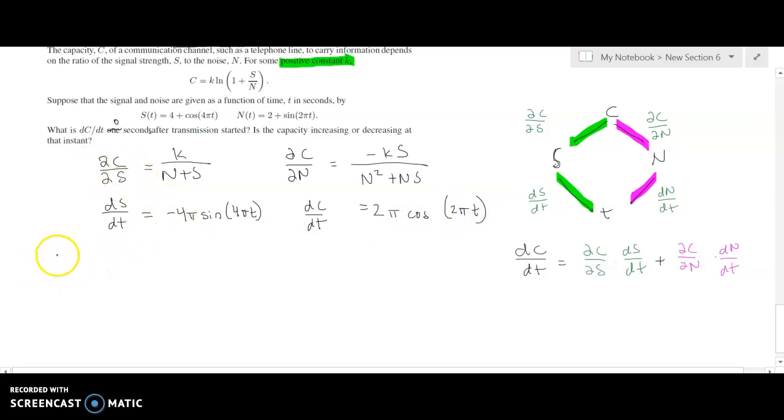And now we can put these pieces together. So dc/dt will be the product of these two guys here. So k over n plus s times negative 4 pi sine of 4 pi t plus, now we have dc/dt which is negative k s over n squared plus ns times 2 pi cosine of 2 pi t.